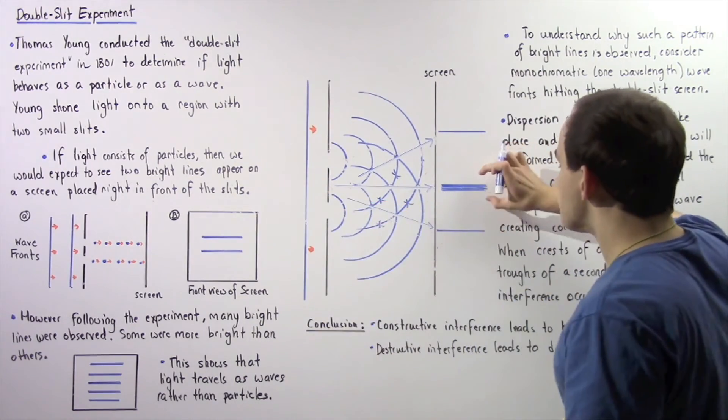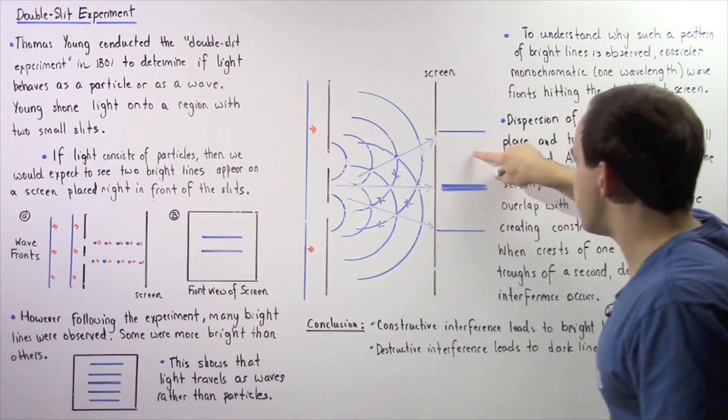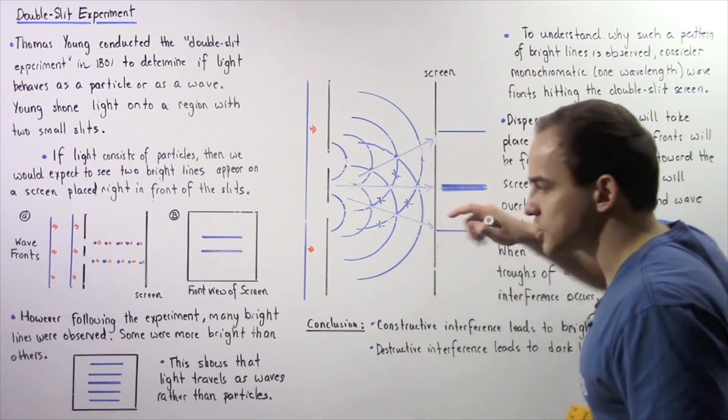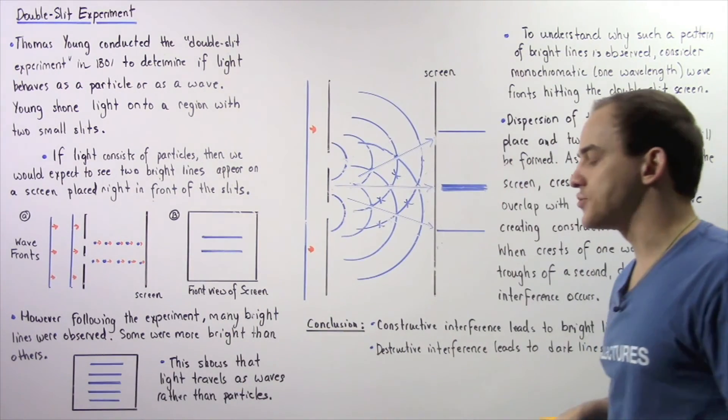And notice the regions in between these bright lines are dark lines. And we can do the same exact thing with these x's. So these are the bright lines that are described in the following diagram, and these are the dark lines that are found between these bright lines.